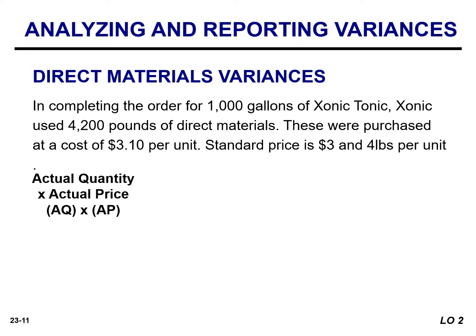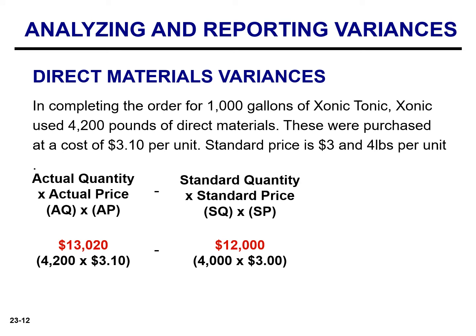Part of the total variance of $3,000 is due to a materials variance. In completing the order for 1,000 gallons, the company used 4,200 pounds of direct materials at a price of $3.10 per unit, for a total cost of $13,020. The standard requires 4 pounds of material per gallon, so it should have only used 4,000 pounds. The standard cost per pound is $3.00, so the amount that should have been paid based on standards is $12,000.